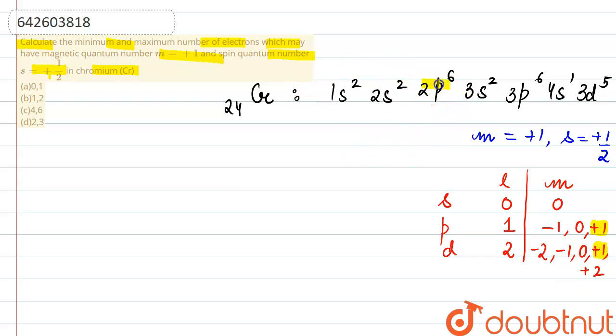If we check the configuration, p subshell is there in 2p6 electrons are filled, then 3p6 electrons, and d is there in 3d5. Let's see 2p: how electrons will be arranged. One, two, three, then electrons are paired up like this. So this is 2p6.